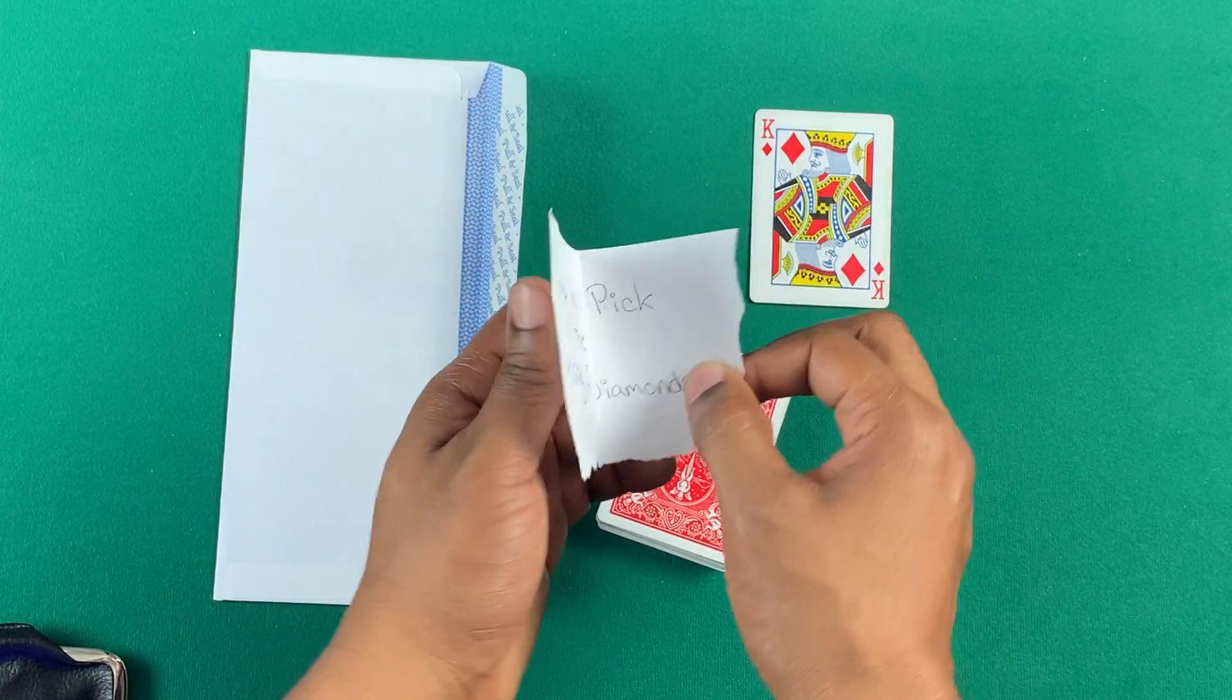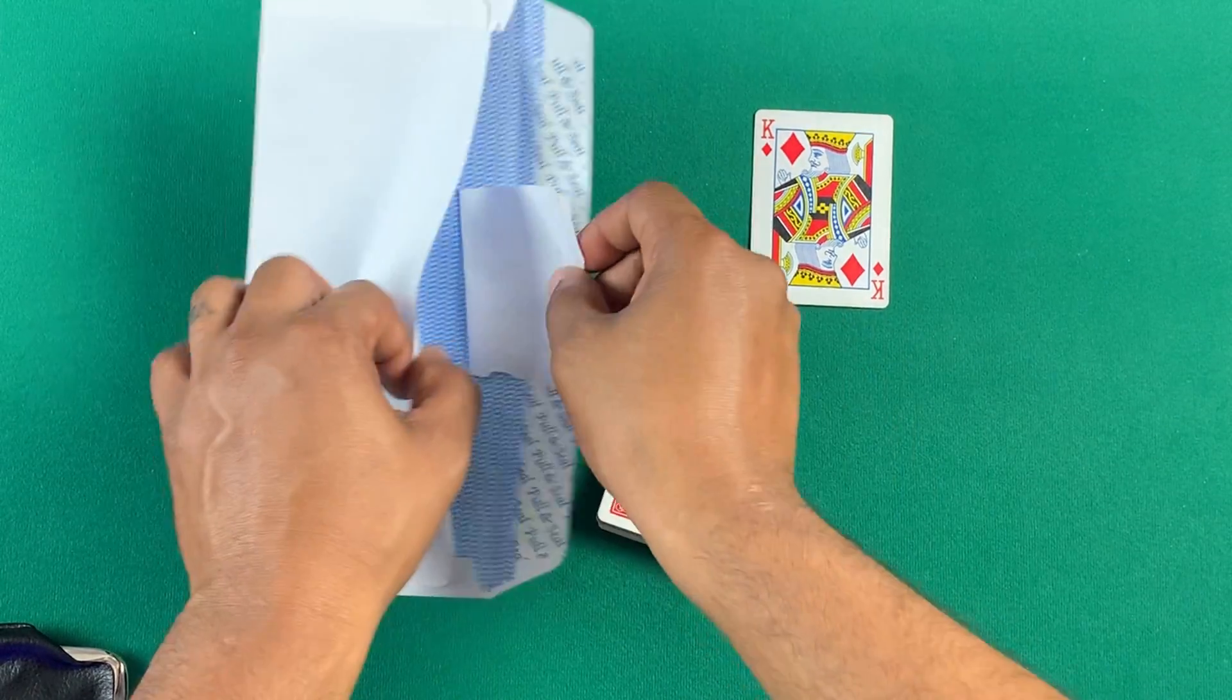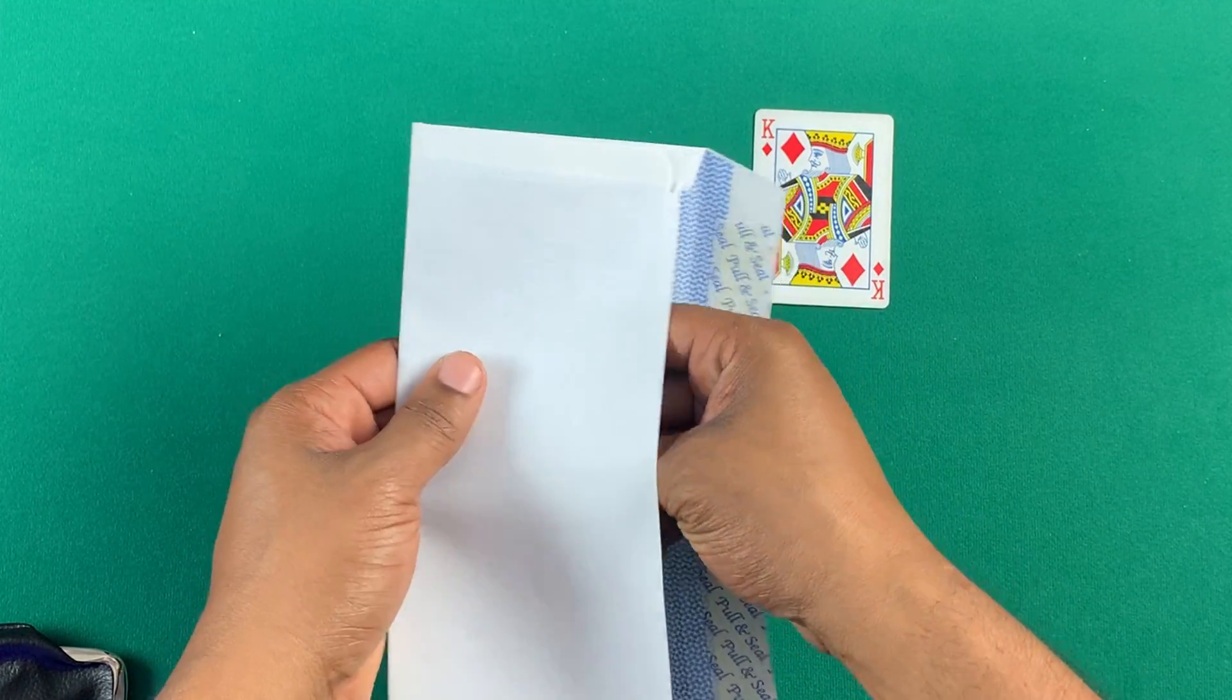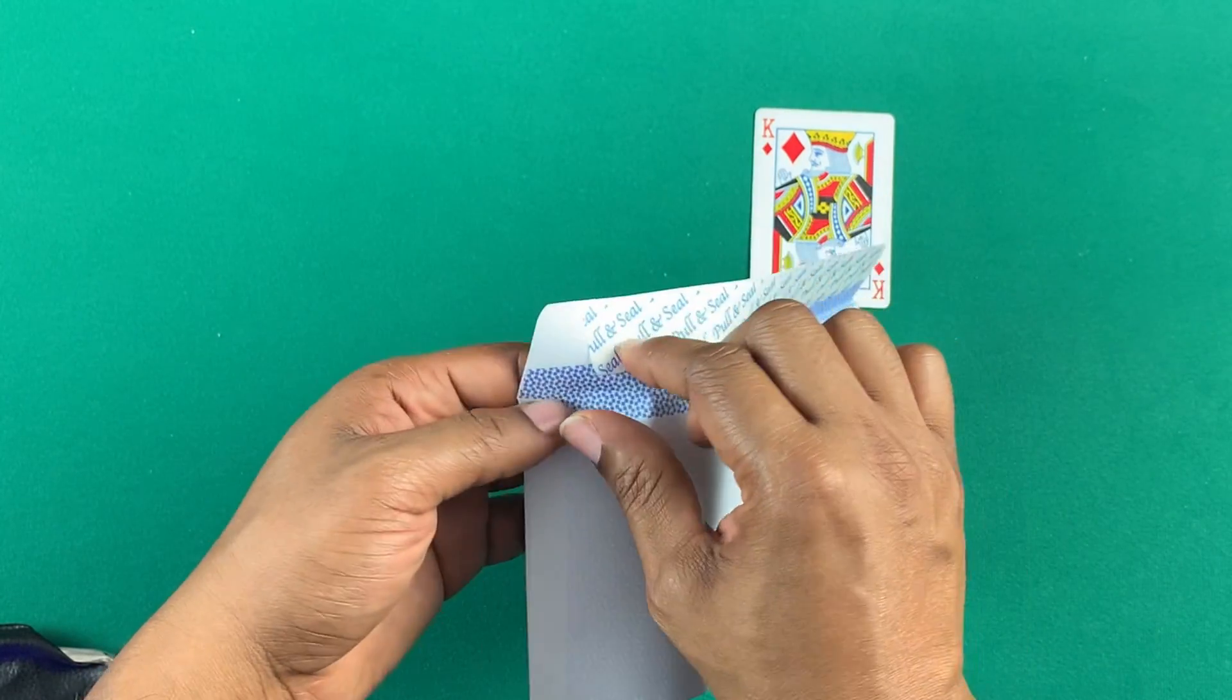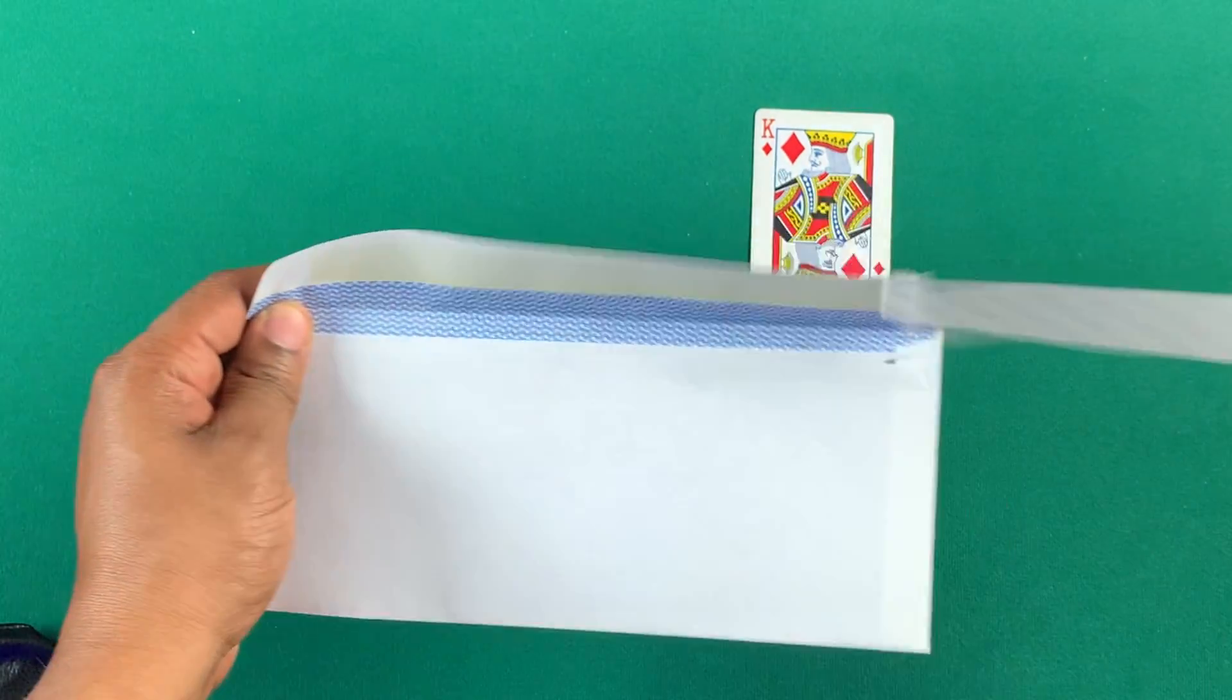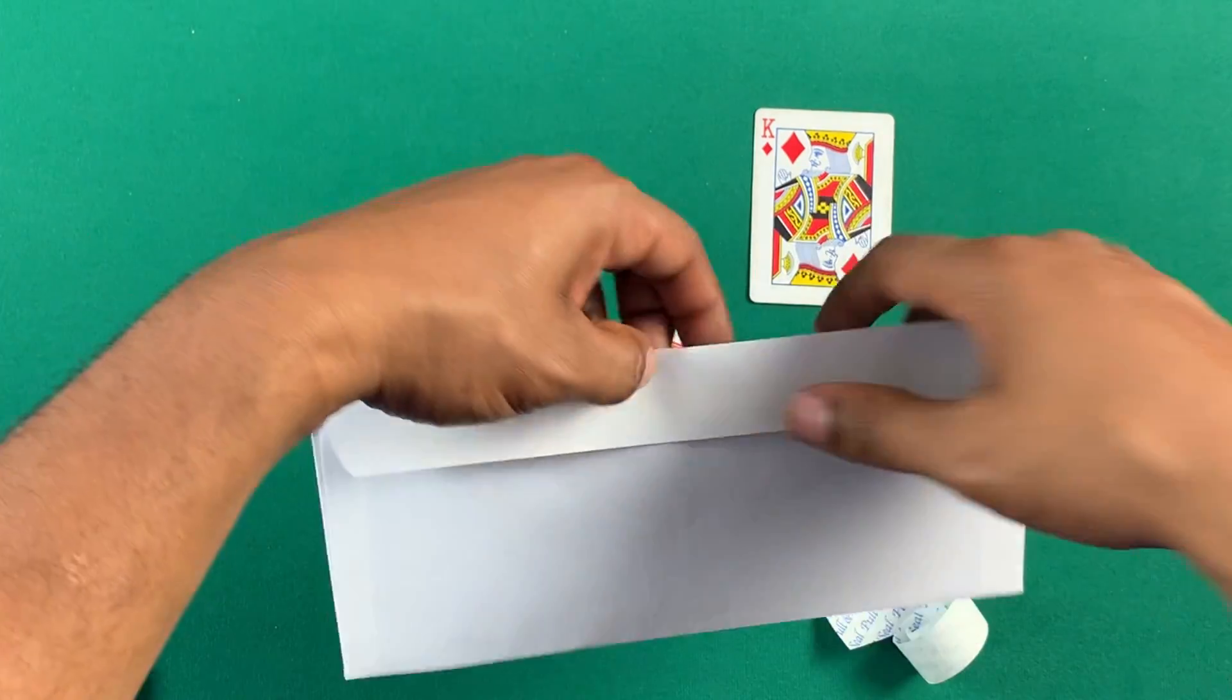But you'll need to write your prediction here. You're going to take that, place it inside of an envelope. Now, to make this better, you can even seal it. So, I'm going to pull the seal off and I'm going to seal the envelope. Just like this.